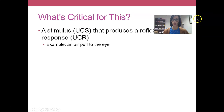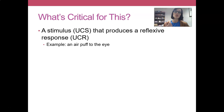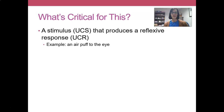So what's critical for classical conditioning — and I've already mentioned this, but it bears repeating — is you need to have some stimulus, an unconditioned stimulus, that produces a reflexive response. For example, a puff of air to the eye is going to cause you to blink and for your eyelid to close. But that's not something you are trained to do — this is something you do reflexively.